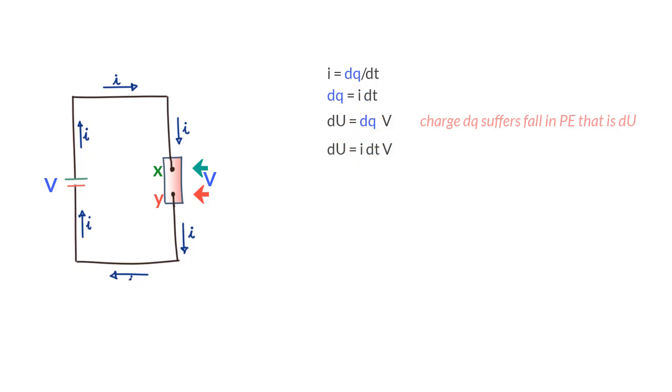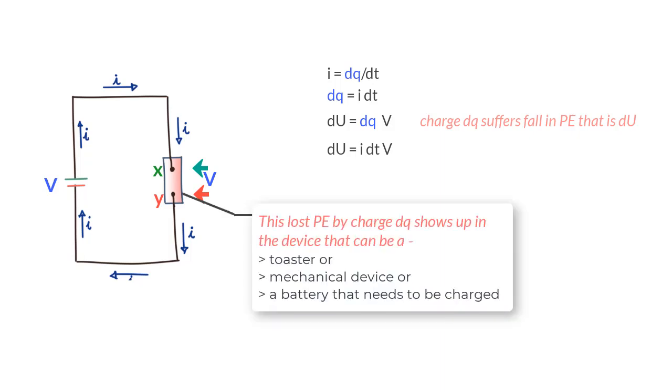If this charge DQ has suffered a fall in energy, this energy should show up somewhere per the law of conservation of energy. This lost potential energy shows up as energy in the attached device. This energy could either heat up your toaster that may contain a resistor, or rotate the shaft of a motor to lift a heavy load, or even provide the chemical energy to a discharge cell.